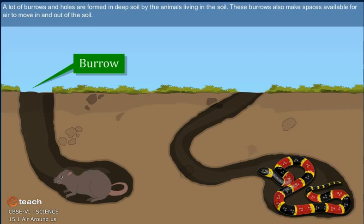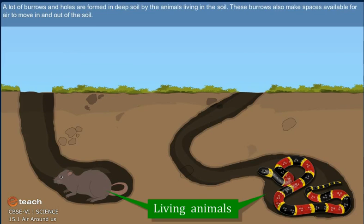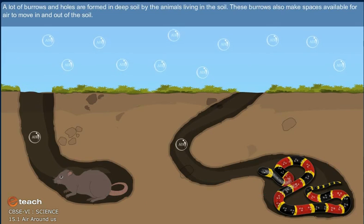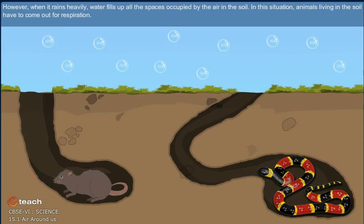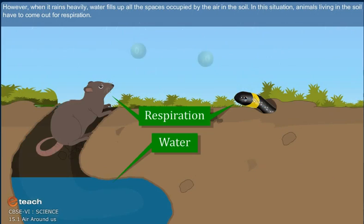A lot of burrows and holes are formed in deep soil by the animals living in the soil. These burrows also make spaces available for air to move in and out of the soil. However, when it rains heavily, water fills up all the spaces occupied by the air in the soil. In this situation, animals living in the soil have to come out for respiration.